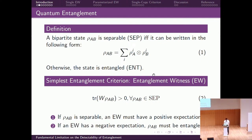The simplest entanglement criterion is entanglement witnesses. An entanglement witness operator W satisfies the condition that its expectation value is positive for all separable states. If an entanglement witness has a negative expectation value, we know that rho must be entangled. However, if we have a positive expectation, we have no conclusion. Throughout this talk, we only consider this kind of no-false-positive criterion — you never classify a separable state as entangled, but might fail to find some entangled states. Most well-known entanglement criteria satisfy this property.